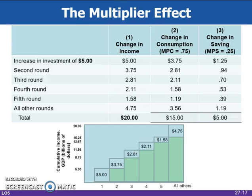This figure illustrates the multiplier process with an MPC of .75. An initial change in investment spending of $5 billion creates an equal $5 billion of new income in round one. Households spend $3.75 billion — we know this because their marginal propensity to consume is .75 — thus creating $3.75 billion of added income in round two. Of this $3.75 billion of new income, households spend $2.81 billion, and income rises by that amount in round three.